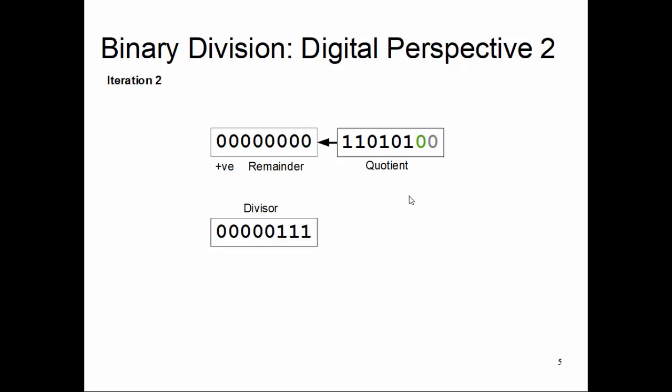Note what we are doing differently here. In our previous Digital Perspective, we shifted the divisor to the right to bring it gradually under the dividend bits. Now in this approach, we keep the divisor at the same position and shift the dividend one by one towards the left — bringing it over the divisor — so that it has more value than the divisor and the subtraction result becomes positive.